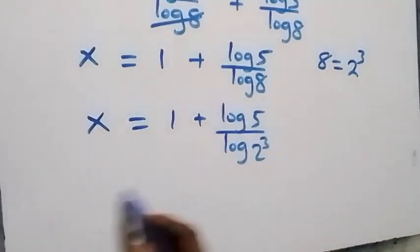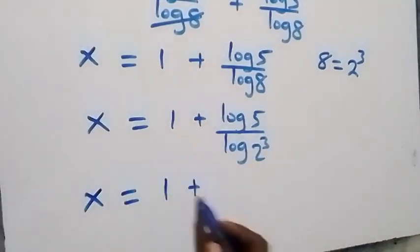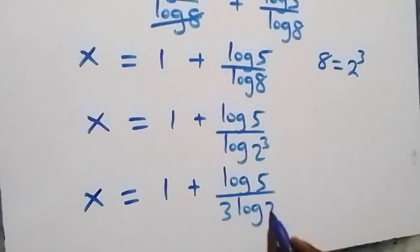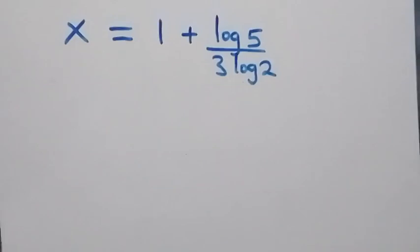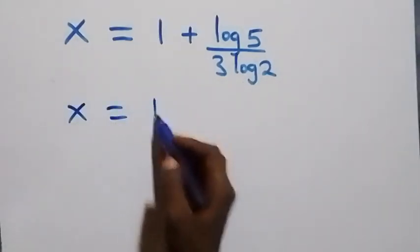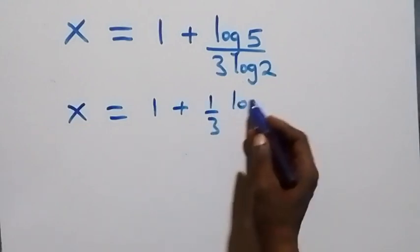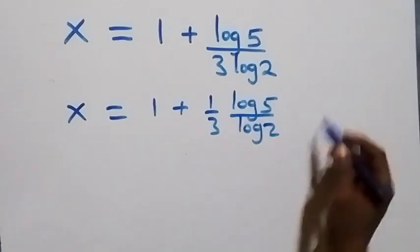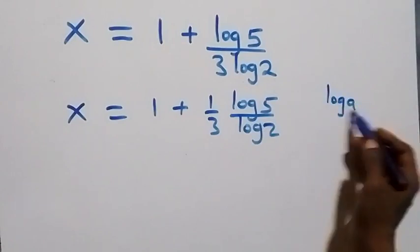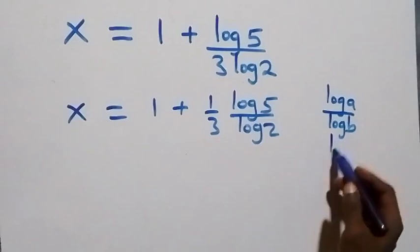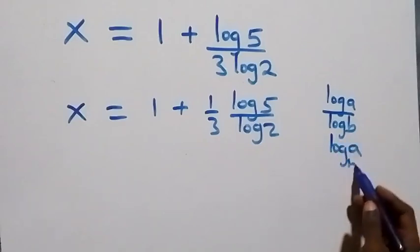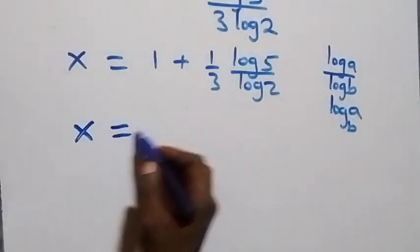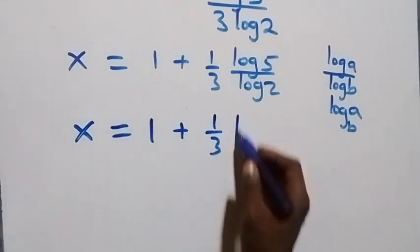Since 8 equals 2 cubed, the power of 3 comes down and we have x equals 1 plus log 5 over (3·log 2). Then applying the change of base rule — log a over log b equals log base b of a — this becomes x equals 1 plus (1/3)·log base 2 of 5.